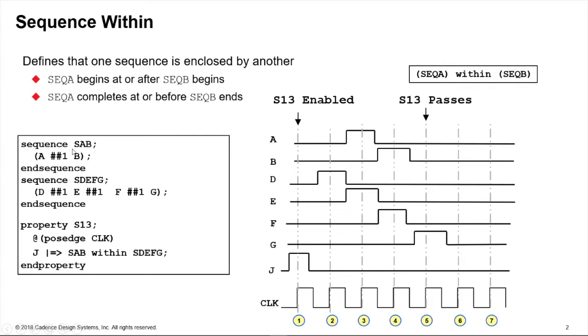Here's an example of sequences. We've got sequence SAB which is A followed by B that's always a fixed number of cycles long, two cycles. This sequence SDEFG is DEFG one cycle apart so that's four cycles long.